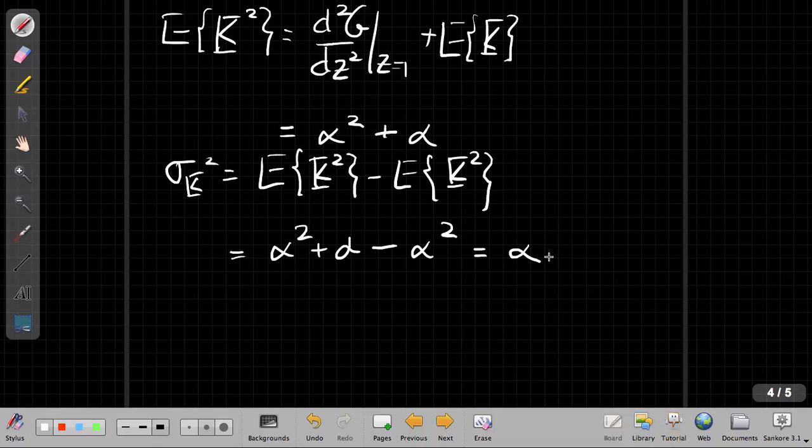So in this case, the Poisson distribution has the variance equal to the mean, which is alpha. And you can check that to verify that.